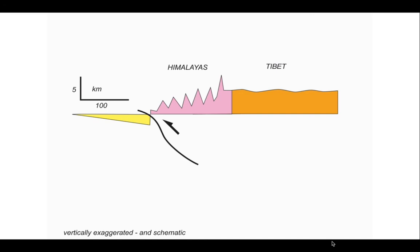In contrast, the Himalayas have got some of the greatest relief on the planet — high mountains but also very deep-cut valleys. And then as you go out onto the Indian side, on the left hand side of this diagram, you have the Foreland Basin, which is an area of active subsidence.